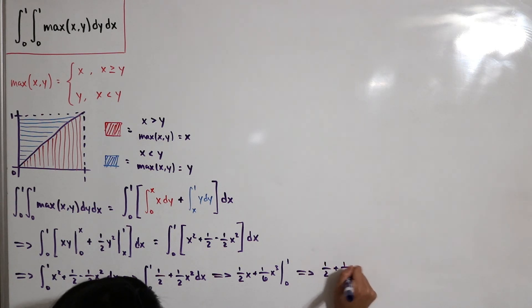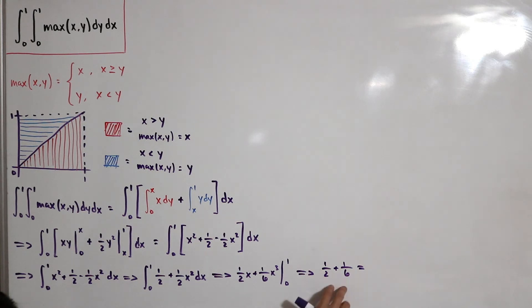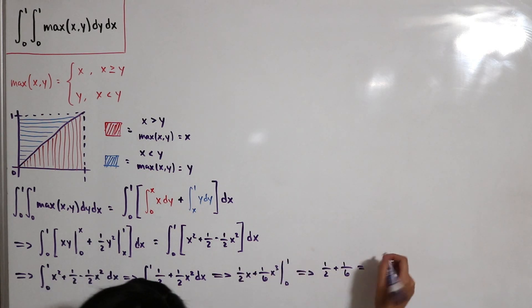So this is one half plus one over six. If I find a common denominator and add those terms, one half is the same thing as three over six, then plus one over six is four over six. Then that reduces to just two over three.